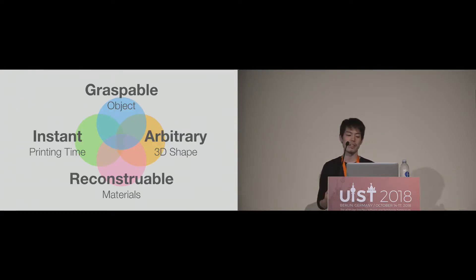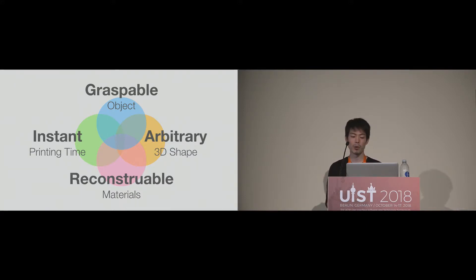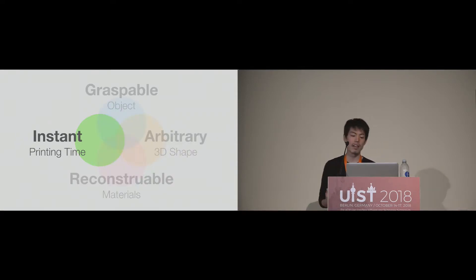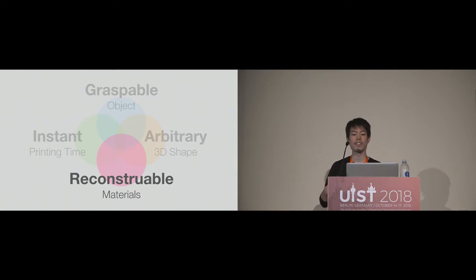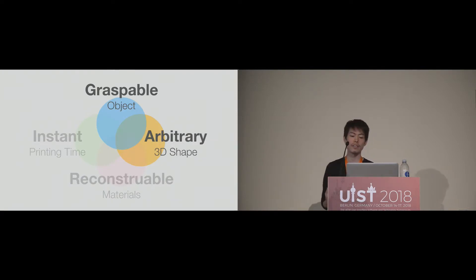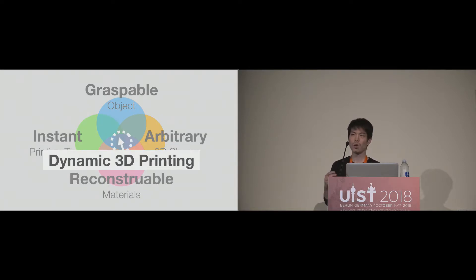Dynamic 3D printing aims to achieve four properties: instant, reconstructable, arbitrary, and graspable shape formation. Like shape displays, it can instantly and dynamically render physical objects. Like digital materials or constructive assembly, the material can be reconstructable. Also, like existing 3D printers, it can create arbitrary and graspable shapes in three dimensions. We define dynamic 3D printing as a class of systems that have all of these properties.